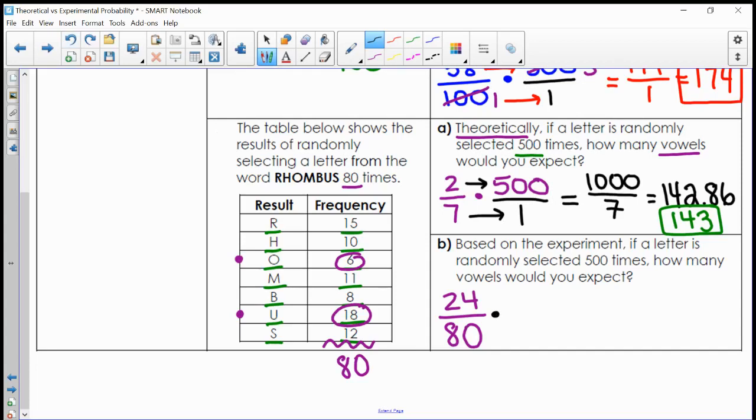With my experimental data, let's find out what would happen if I were to pick this 500 times. I see some cross-canceling here. I'm going to go ahead and cross-cancel my 80 and my 500, because I see that I can divide both of those numbers by 20. 80 divided by 20 would give me 4, and 500 divided by 20 would give me 25. Now that my numbers are a little bit easier, I'll go ahead and multiply straight across. 24 times 25 would give me 600, over 4 times 1, which would give me 4. And if I simplify this, I would get an answer of 150 times.